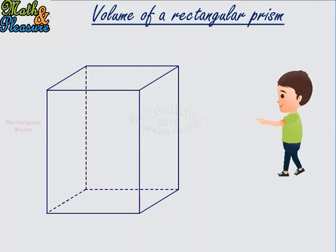This solid is called a rectangular prism. It has three dimensions: length, width, and height. Let's suppose that the length measures three centimeters, the width measures three centimeters, and the height measures four centimeters.